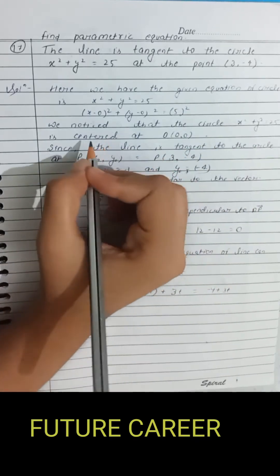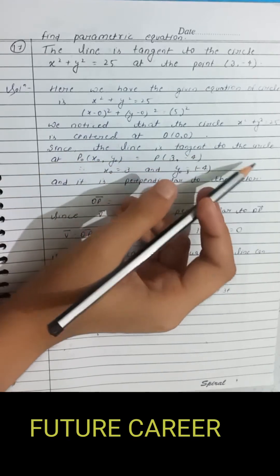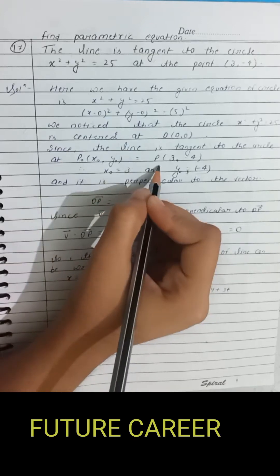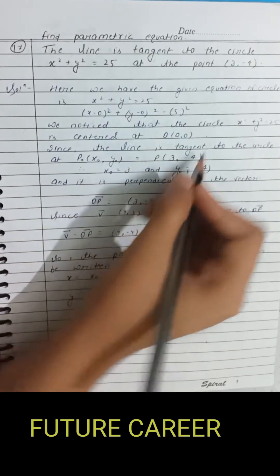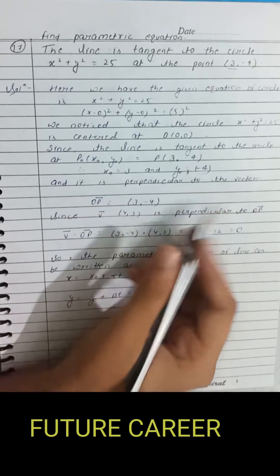Since the line is tangent to the circle at P naught (x naught, y naught) equals (3, -4), it is perpendicular to the vector OP, which equals (3, -4).